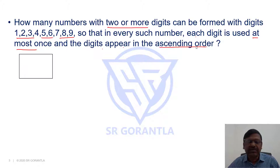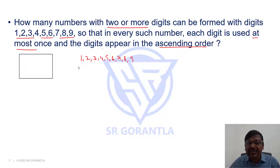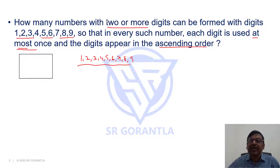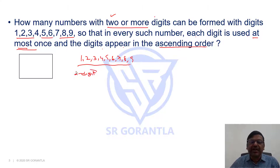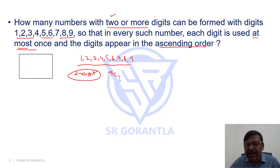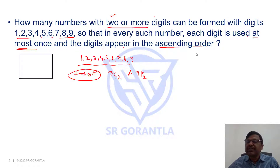We have digits 1 through 9 — there are 9 digits. Each digit is used at most once. We need two or more digit numbers. For two-digit numbers, using these nine digits, how many can be formed? Is it 9C2 or 9P2? In other words, is it selection only, or does it also involve arrangement?